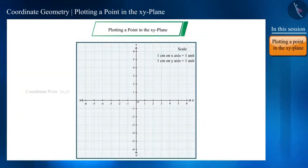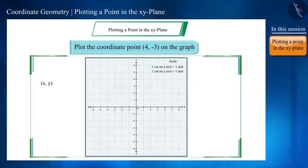So let's plot this coordinate point 4 minus 3 on the graph paper. Here the X coordinate is 4 and the Y coordinate is minus 3. Now we will find the number 4 on the X axis and then draw a perpendicular from there or say a straight line parallel to the Y axis.